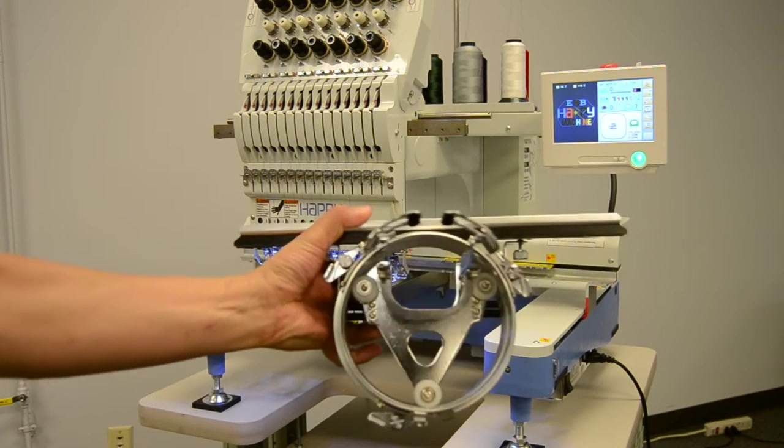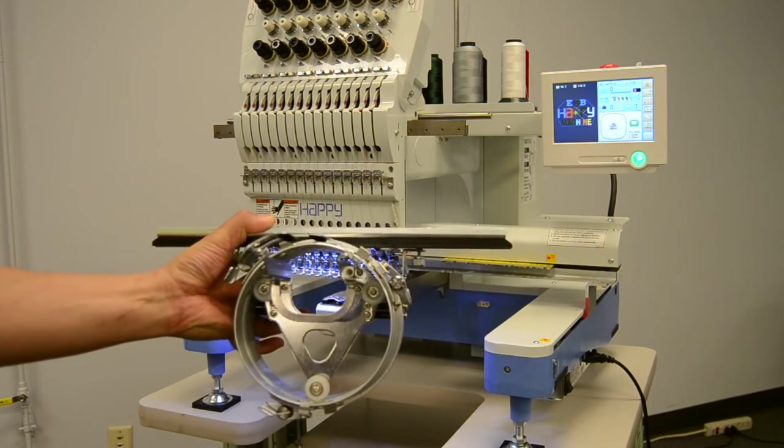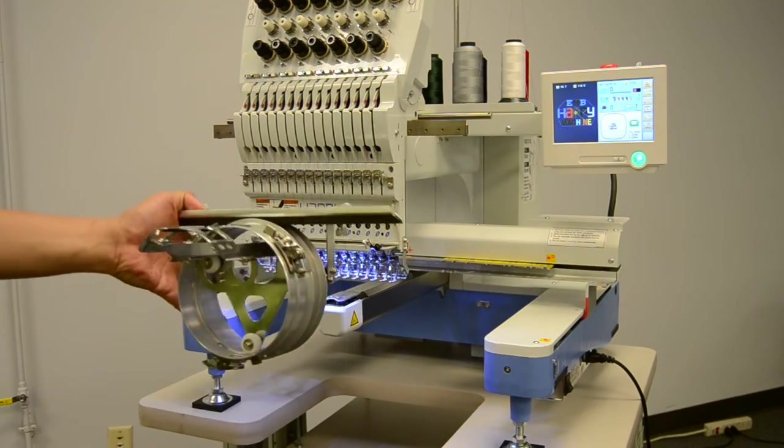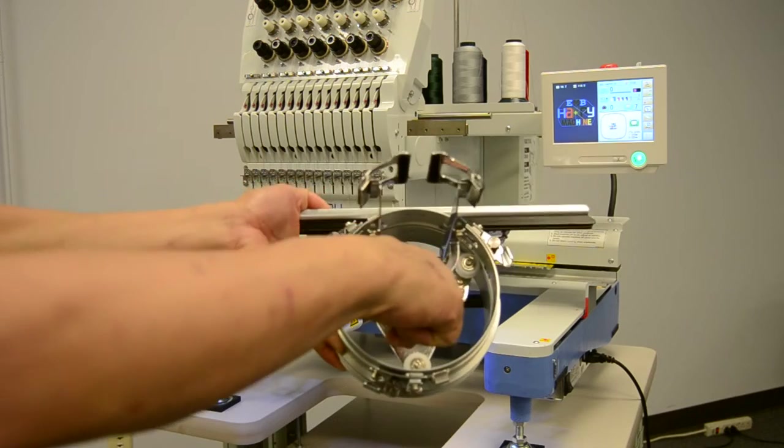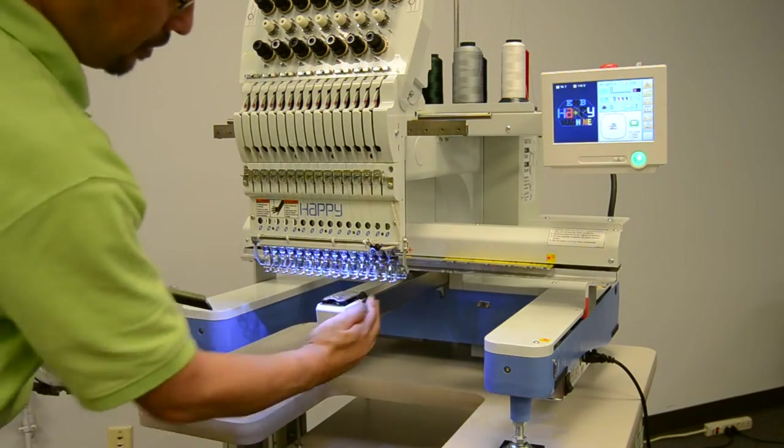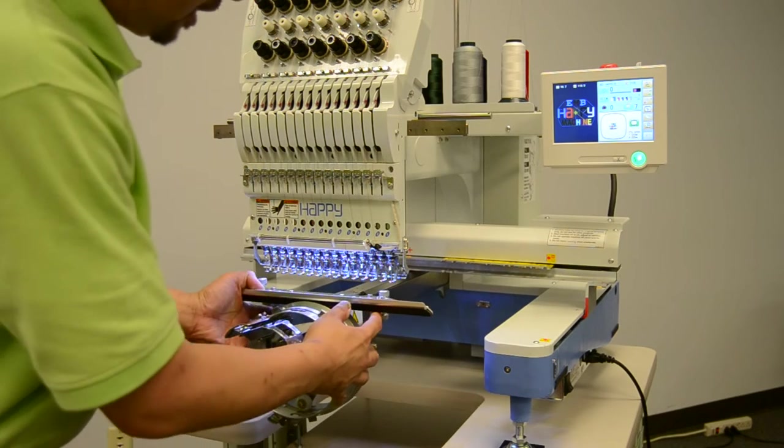And this is what you see here that comes in its own box along with two cap hoops and a stretcher. And what we want to do is slide this onto the machine. There's a square-shaped opening to get you oriented here. That square-shaped opening fits around the rotary hook arm here below the needles. So we'll go ahead and slide that on.